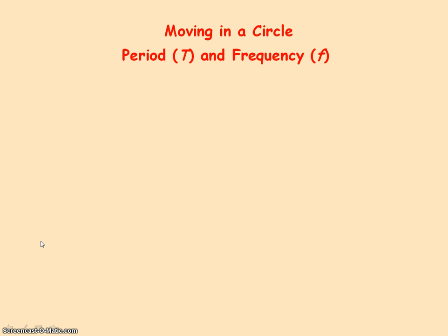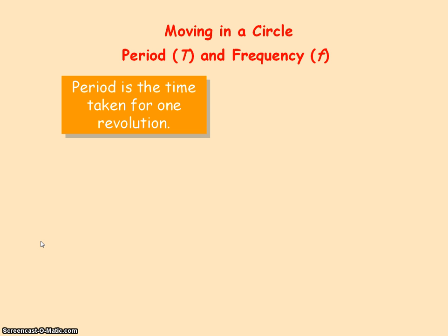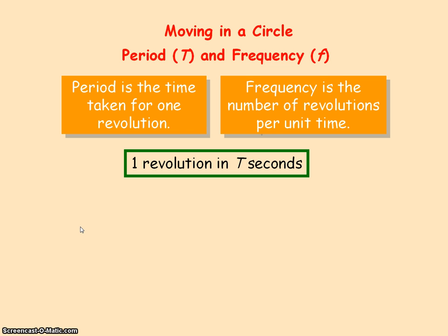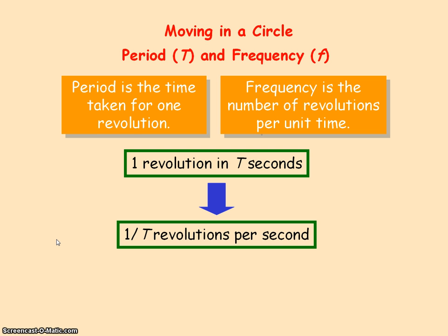The period is given by the time taken for the object to complete one revolution, and the frequency is the number of revolutions completed per unit time. From the definition of period, you have one revolution occurring in T seconds, so that means 1 divided by T revolutions will occur per second. As frequency is the number of revolutions per second, frequency f equals 1 divided by the time period.